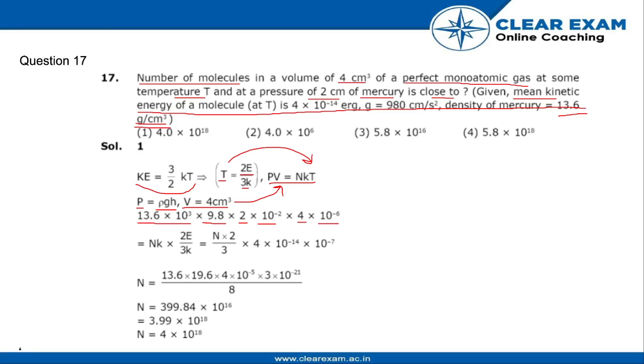This equals NkT and the value of T is found out to be 2E/3k. K cancels, so this is N × 2/3 × E, which is 4 × 10⁻¹⁴ erg, converting erg to joules.